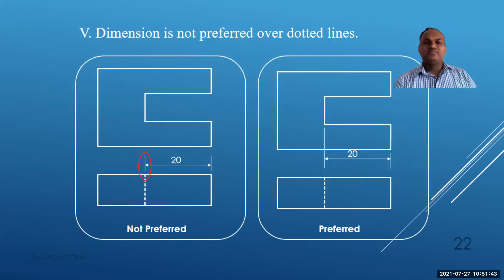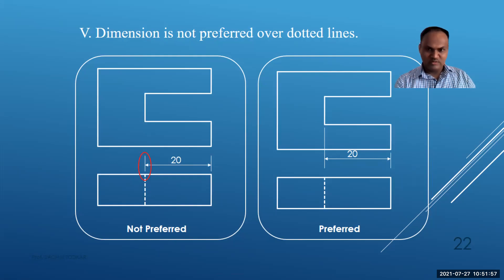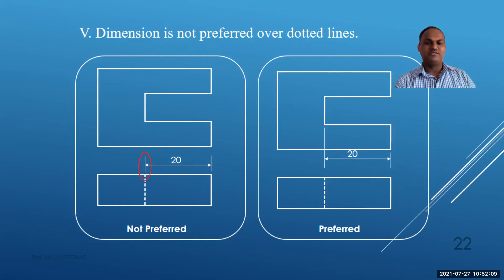Rule 5 — dimensions should not be given to dotted (hidden) lines. Dotted lines represent the hidden portion of an object; if that portion is not visible in the current view but is visible in another view — such as the front view or top view — the dimension should be placed on that visible view instead.